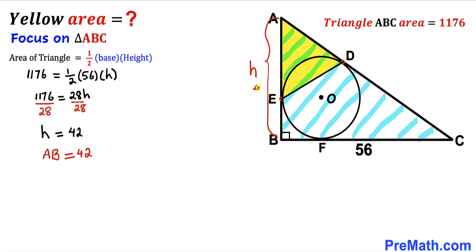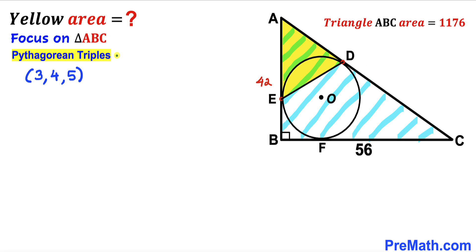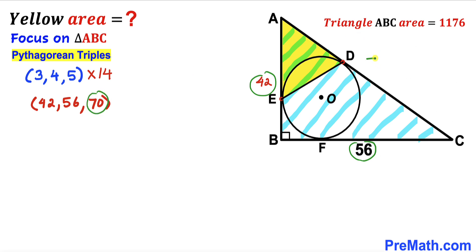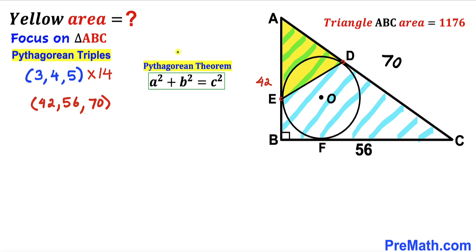Now let's recall the Pythagorean triplet 3-4-5. Multiplying all values by 14 gives us 42, 56, and 70. Since AB is 42 and BC is 56, the hypotenuse AC must be 70 units. You may also verify this using the Pythagorean theorem directly.